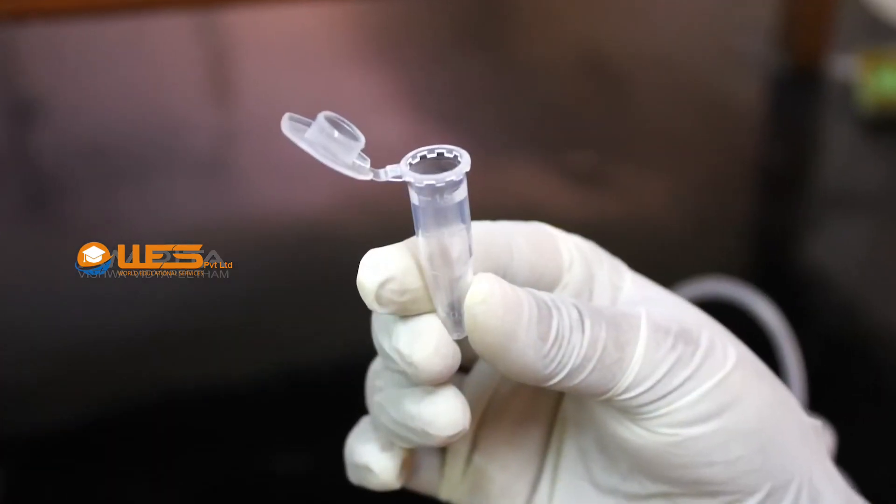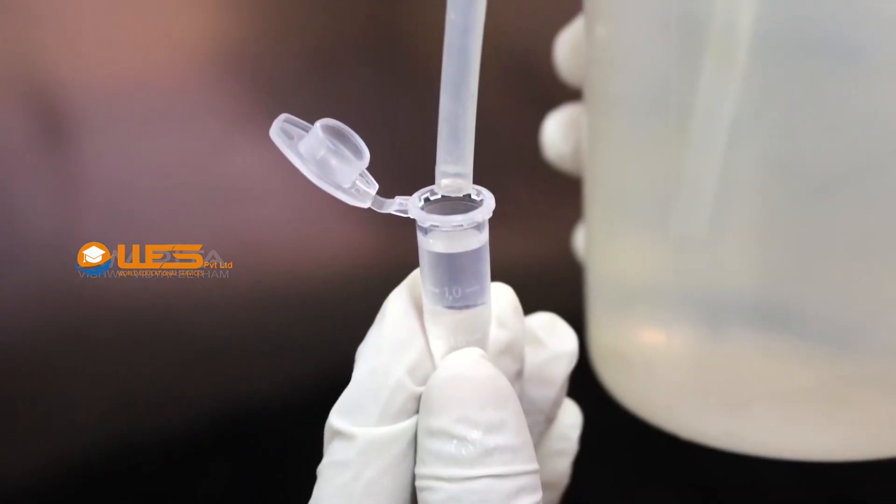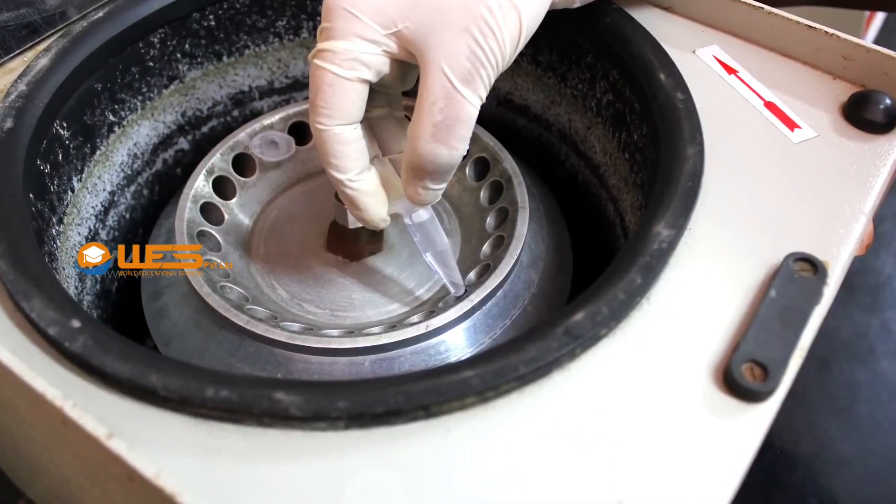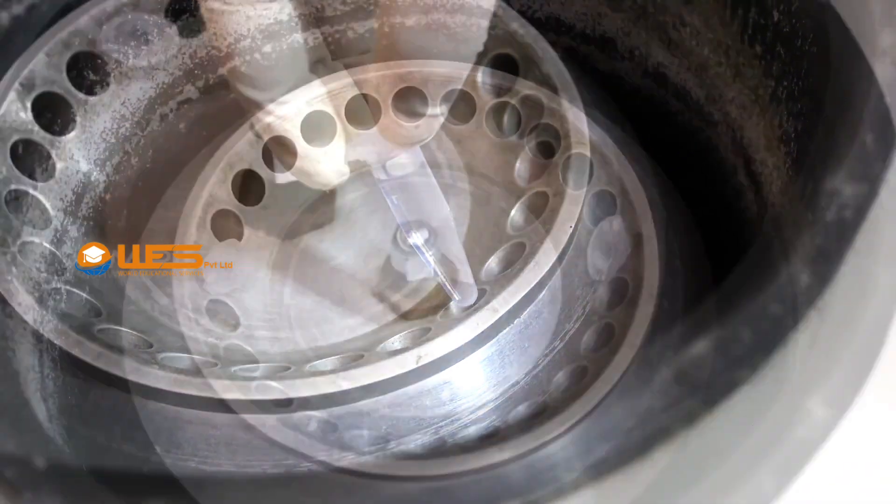Take another centrifuge tube and fill it three-fourths full of distilled water. Place it opposite the first centrifuge tube to balance the centrifuge machine.